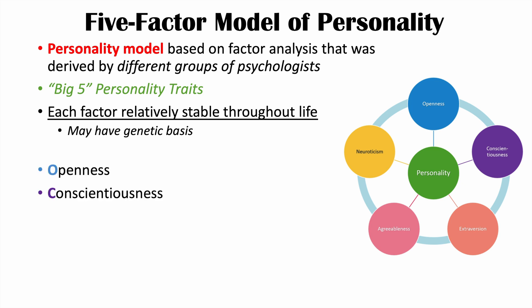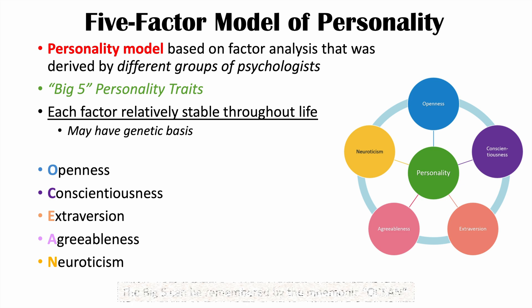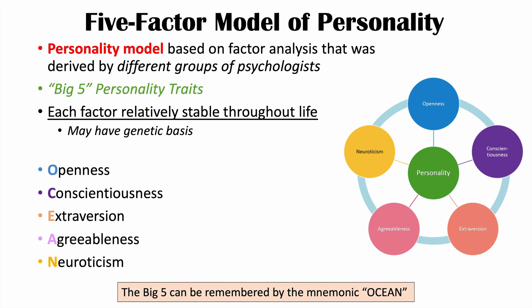A way to remember these five factors is by the mnemonic OCEAN — O-C-E-A-N: Openness, Conscientiousness, Extroversion, Agreeableness, and Neuroticism.